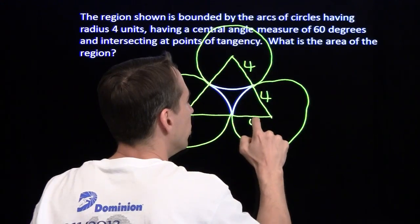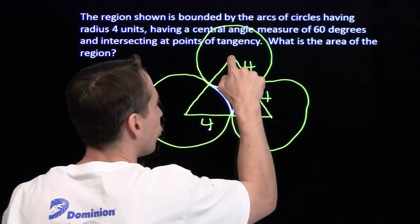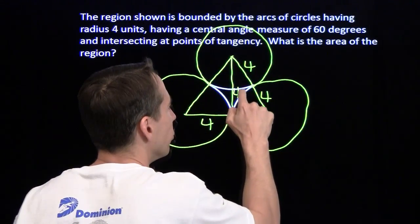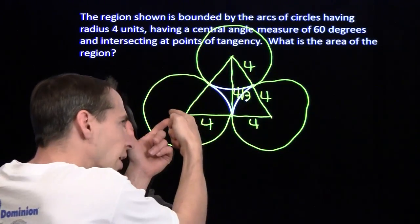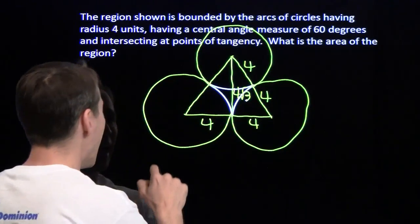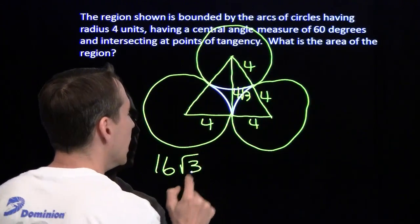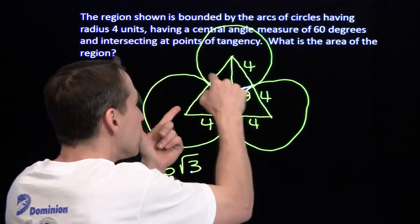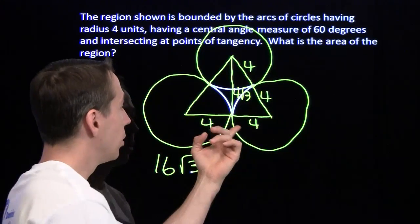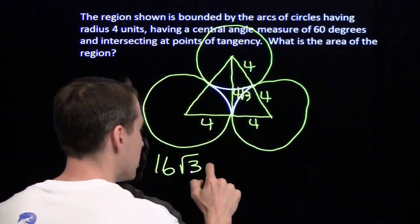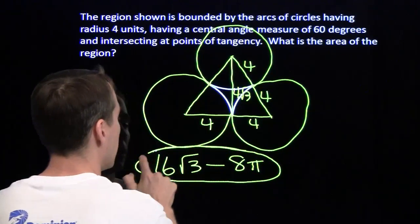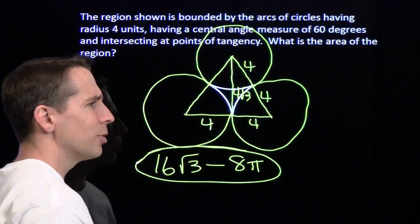Each radius is four units. We can find the area of this equilateral triangle by dropping that altitude. This of course is a 30, 60, 90 triangle, so this altitude here is 4 root 3. So the area of this triangle is half the base times the height. That'll give us 8 times 4 root 3, gives us 32 root 3. Take half of that, and we get 16 times the square root of 3. And then we have to subtract off the areas of these three sectors. Put those three sectors together, we get a semicircle. The whole circle has area 16 pi. We're going to take half of that for the semicircle, and we'll have 8 pi. And there's the area of that funky little region there. That's pretty slick, Harvey.